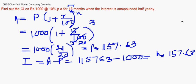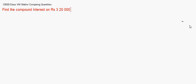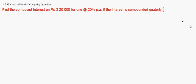Now we take up a question where the interest is compounded quarterly. Find the compound interest on rupees 3,20,000 for one year at a rate of 20 percent per annum if the interest is compounded quarterly.